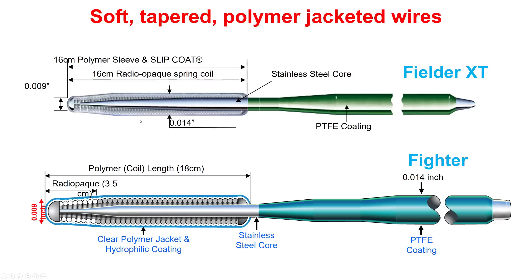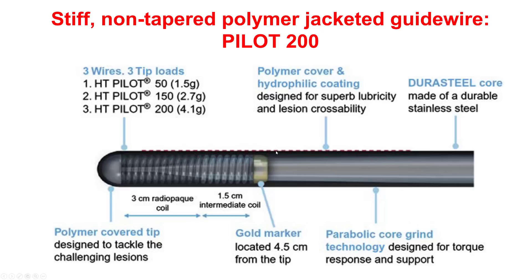The Fielder XT is a 0.009 tapered guide wire. The Fighter guide wire and the Pilot 200, which is stiffer, has a 4.1 gram distal tip and forms larger knuckles.